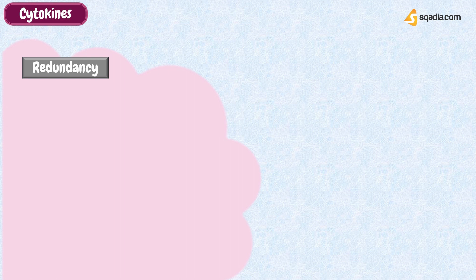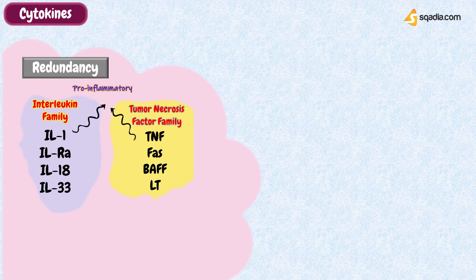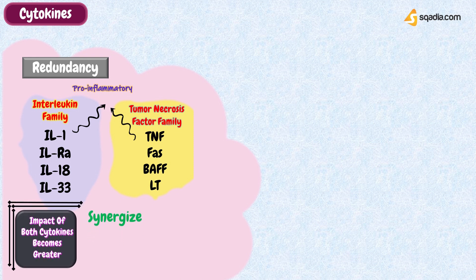Two more important features of cytokines that you should familiarize yourself with are redundancy and pleiotropism. Redundancy refers to the fact that in general, several cytokines secreted during an immune response have very similar properties. For example, tumor necrosis factor and interleukin-1 have similar effects. These cytokines synergize with one another — in other words, the impact of both cytokines being secreted together is greater than the sum of the effects of the individual cytokines.